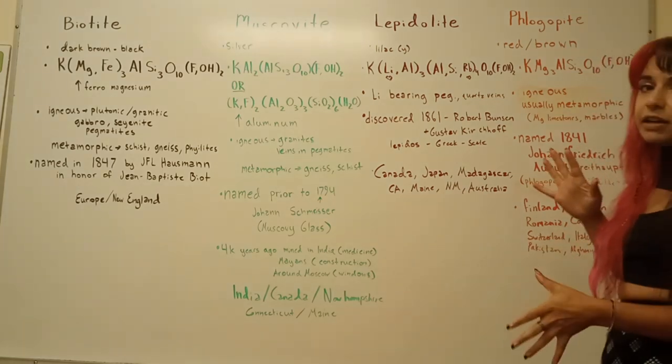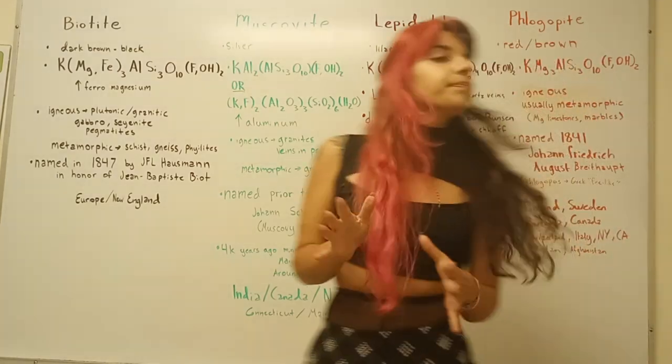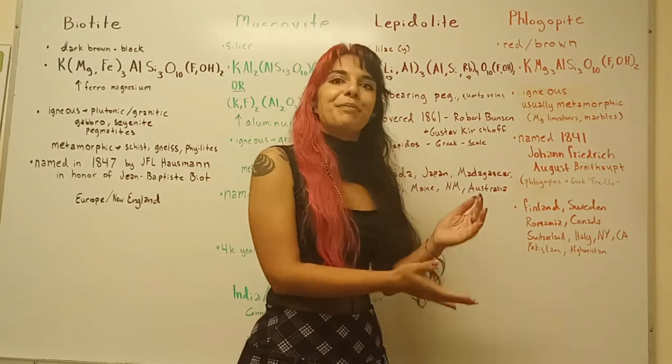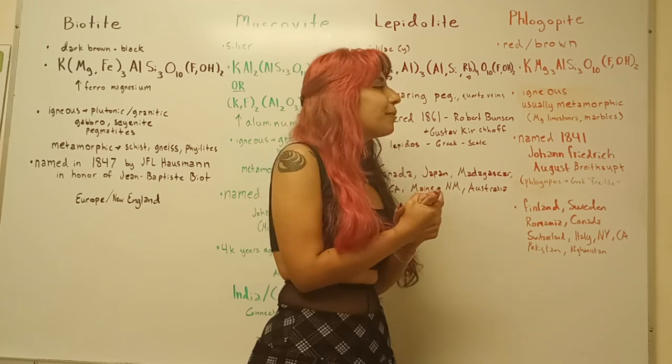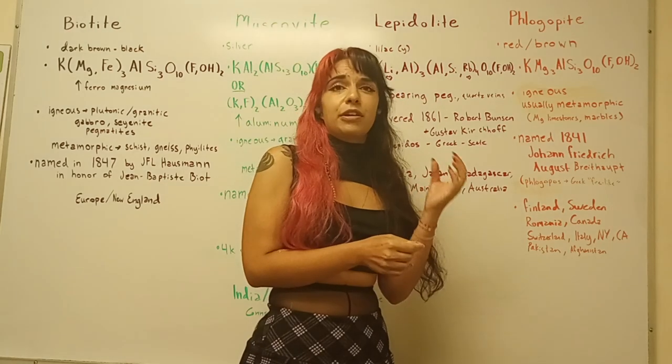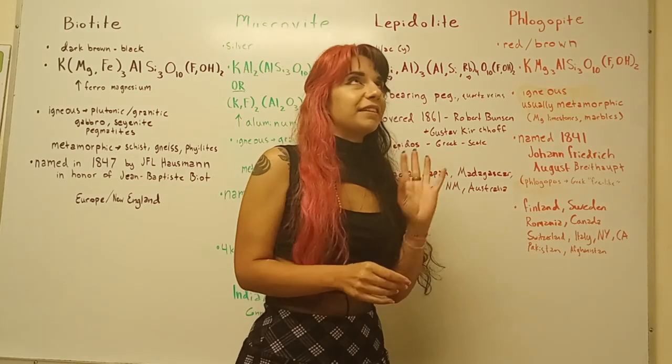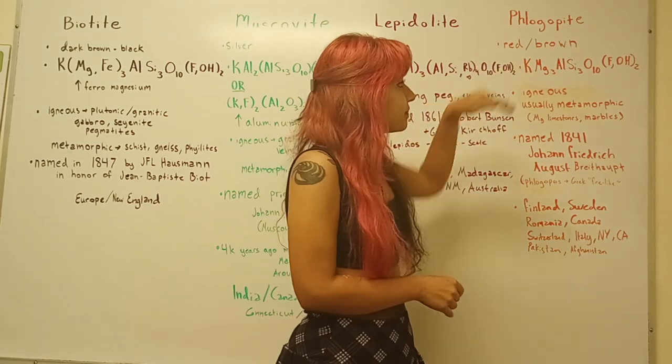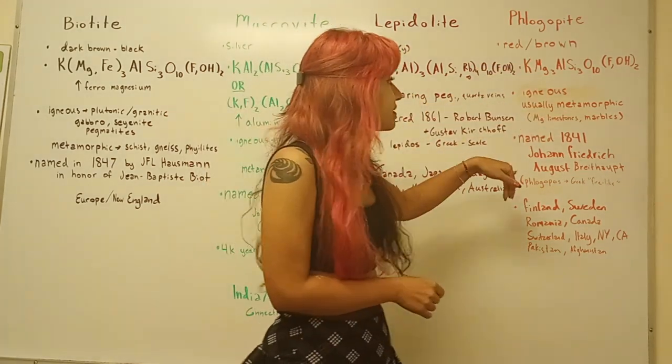So phlogopite is a reddish-y, orange-y, brown mica. I do not have an example of it. I am lacking a piece, so I'll have to get one. But the gemmier varieties are almost this really pretty like gold color, and they fluoresce, and just beautiful crystals. And then here's a formula, so as you can see, similar to the rest.